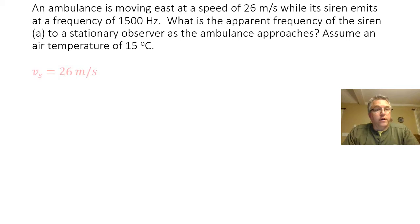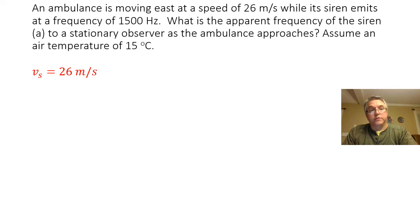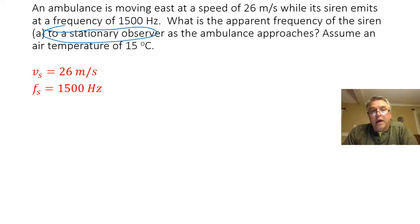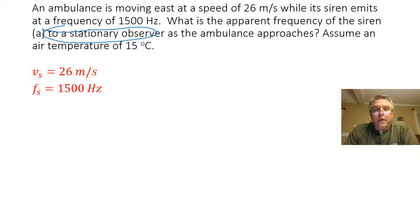We are given the velocity of the source of our sound wave — the ambulance — is 26 meters per second. Because the ambulance is moving toward a stationary observer, the velocity of my source is going to be positive 26 meters per second. The frequency emitted by the source is 1500 hertz, and I'm given an air temperature of 15 degrees Celsius, so I know that I need to calculate the speed of the sound wave at that temperature.